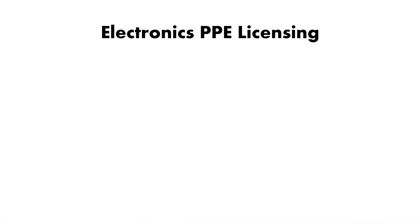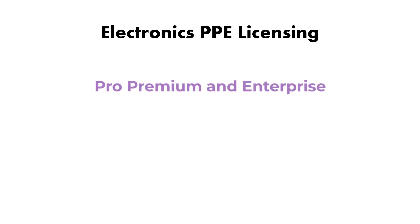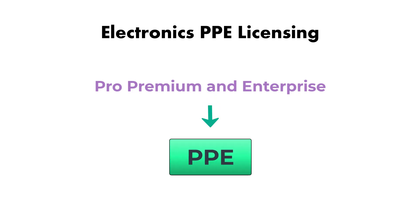Let's take a deeper dive into Electronics Pro, Premium and Enterprise license structure and how to enable it. In short, we call this PPE, and you can use the PPE licensing from 2020 R1 version of ANSYS or later.